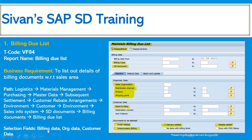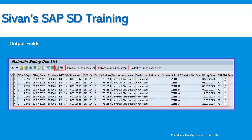The selection fields are like billing data, organization data, customer data, and so on — shipping point, reference shipping point, sold-to party, destination country — all these selection criteria we can provide. We can select them and then the output will be displayed in the system. This is how we can see the list of outbound deliveries which are due for billing.